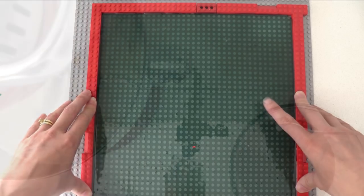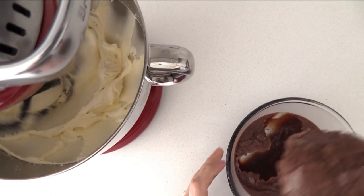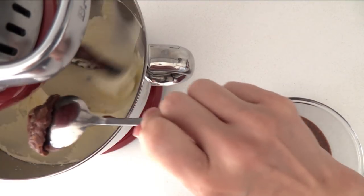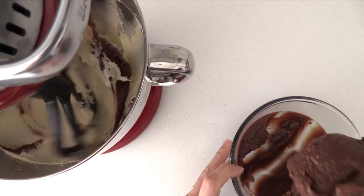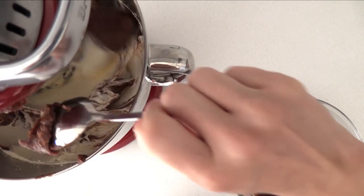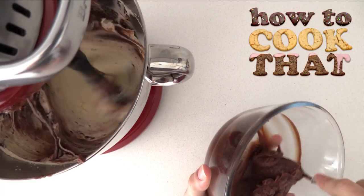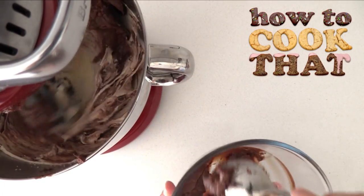For the frosting, take one batch of vanilla buttercream and mix it with a cooled batch of milk chocolate ganache. I'll put all of the recipe quantities for this on the website howtocookthat.net in grams, ounces, and cups.